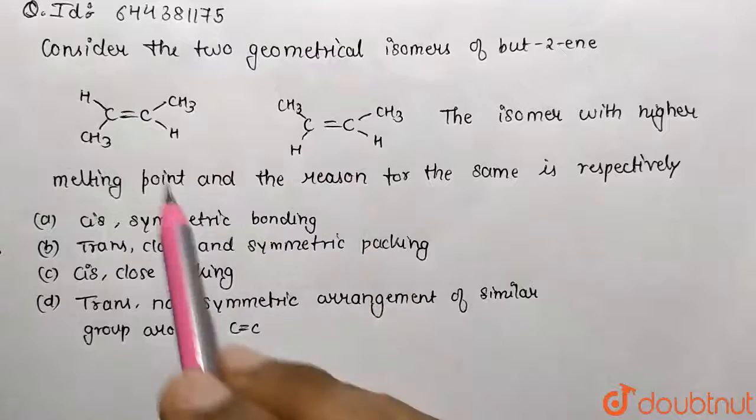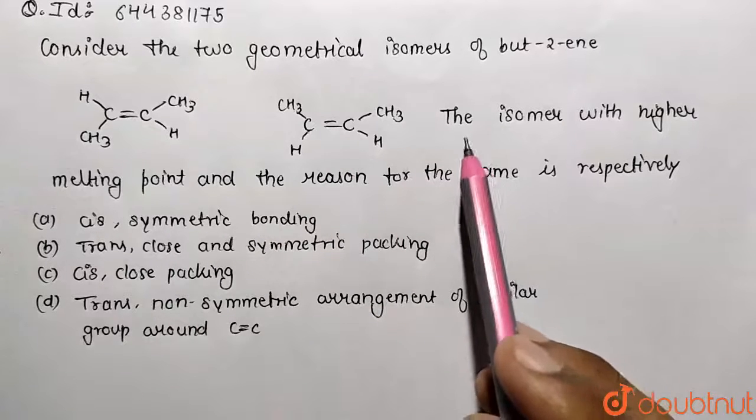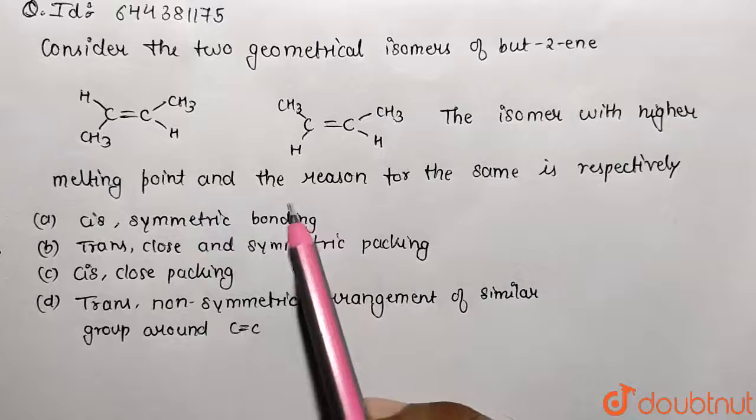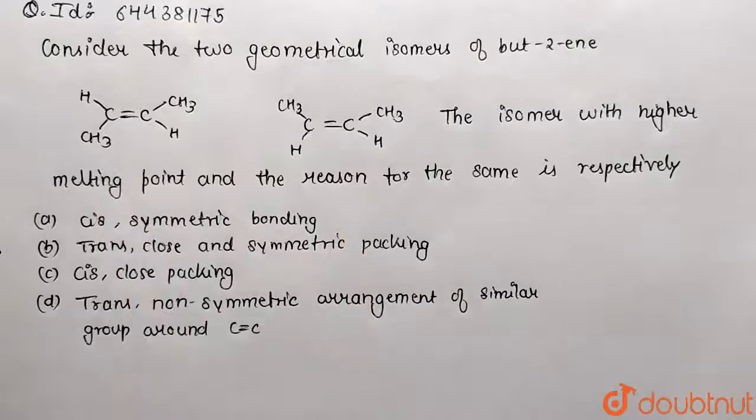Cis form and trans form are given and they are asking about the isomer with higher melting point and the reason for the same is respectively what. So which is going to have higher melting point? Obviously melting point is going to be higher for trans form.